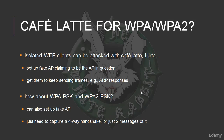We had looked at Cafe Latte for WEP, and that was for the case of isolated WEP clients — a client that has previously connected to a WEP access point and has the WEP key stored. If you can induce them to start communicating with what they think is the access point, you can start capturing frames. Now, what about in the case of WPA and WPA2 — can we do the same kind of thing and similarly target an isolated client?